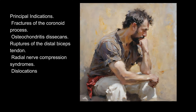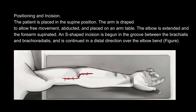the distal biceps tendon, radial nerve compression syndromes, and dislocations. Positioning and incision: the patient is placed in the supine position. The arm is draped to allow free movement, abducted, and placed on an arm table. The elbow is extended and